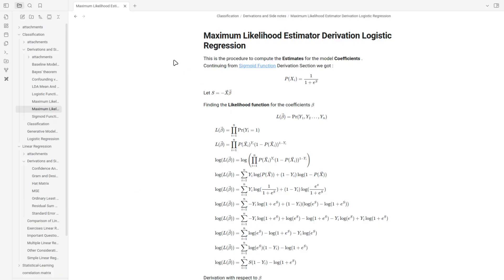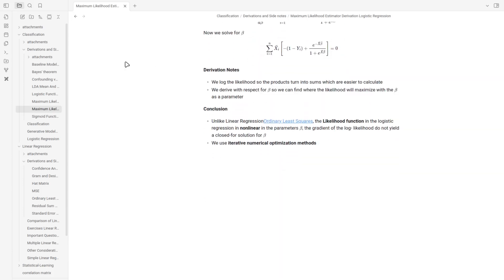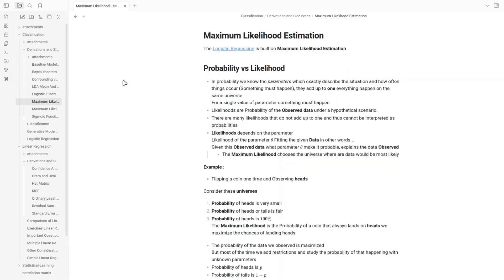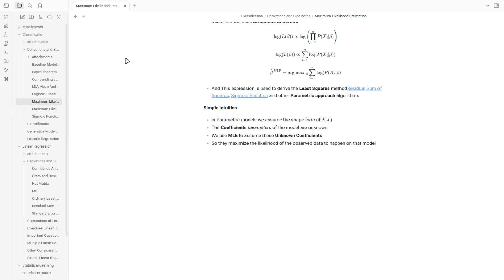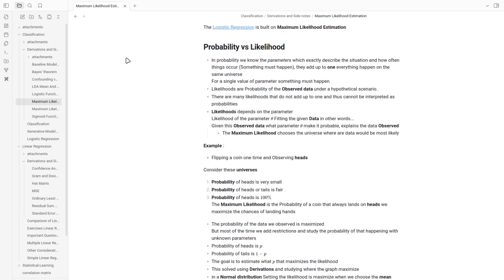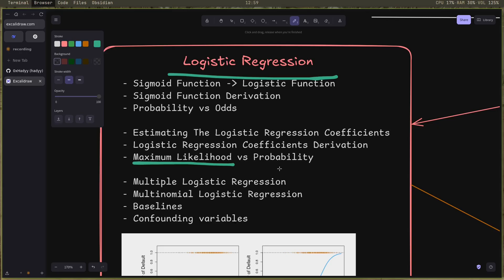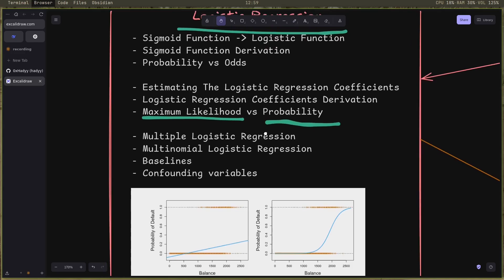After that, same as linear regression, I studied estimating the logistic regression coefficients and all the derivation related to it, which uses maximum likelihood. This also led me to studying maximum likelihood and its key differences from probability. I spent about a day or two just focusing on these topics.